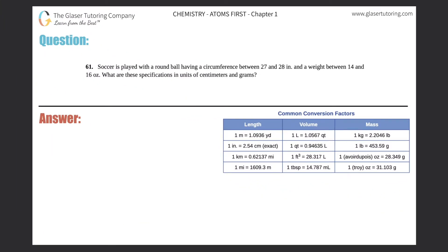Problem 61: A soccer ball is played with a round ball having a circumference between 27 and 28 inches and a weight between 14 and 16 ounces. What are these specifications in units of centimeters and grams? So it looks like we're going to be doing our first actual conversion.